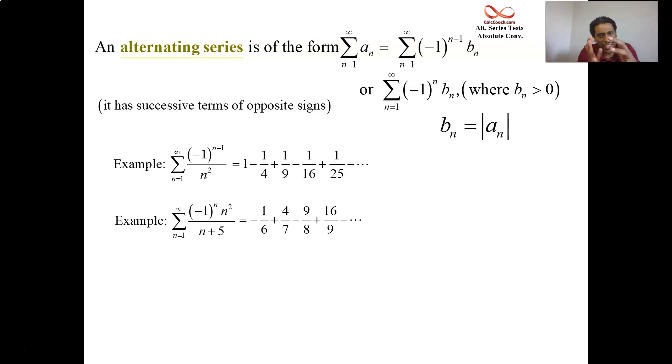In each of these, they have this b_n part, which is the part without the alternating. In the first example, 1 over n squared is the b_n. In the second one, n squared over n plus 5 is the b_n. And these aren't the only two ways that we can have the sign go back and forth between plus or minus 1.